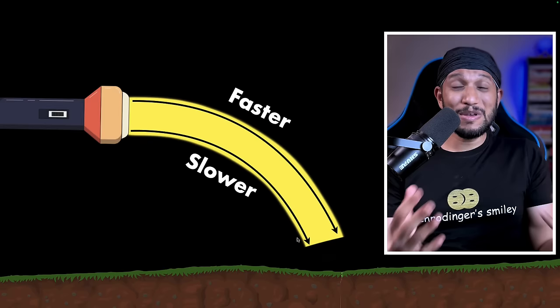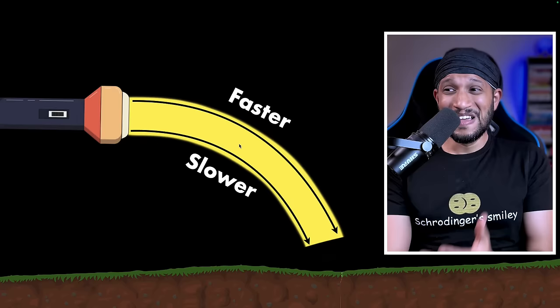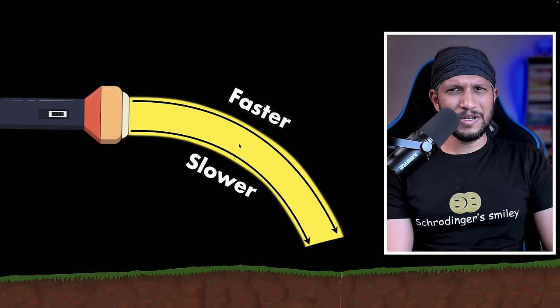This violates Einstein's own postulate, which said that the speed of light must be the same. But over here, look, the speed of light is not the same. So Einstein, it's going to be super hard for you to get out of this one, isn't it? When Einstein says, well, actually, Mahesh, it's going to be super easy, barely an inconvenience.